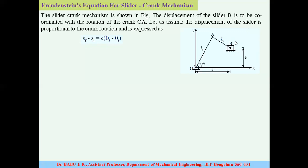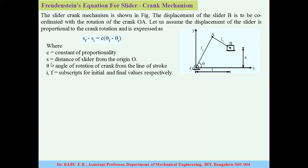The displacement of the slider is correlated with the rotation of the crank, so the crank rotates from initial to final position. The initial position of the crank corresponding to Si is represented as theta_I, and the final position as theta_F. Here, C is the constant of proportionality, S is the distance of the slider from the origin, theta is the angle of rotation of the crank from the line of stroke, and I and F are subscripts for initial and final values respectively.